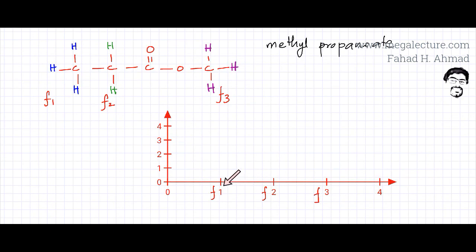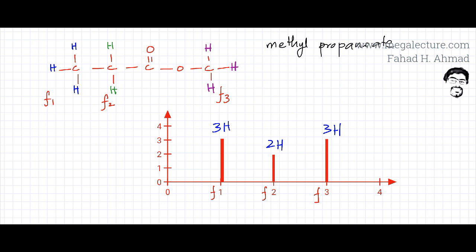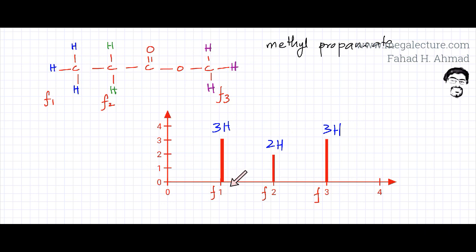Plotting this on a graph: frequency F1 is absorbed by three hydrogens, so its relative height is three. Frequency F2 is absorbed by two hydrogens, so its height is relatively lower — a 3:2 ratio. Frequency F3 is absorbed by three hydrogens, so its relative height is also three. The height determines the ratio of the number of hydrogens in different chemical environments: three hydrogens in the first environment, two in the second, and three in the third.